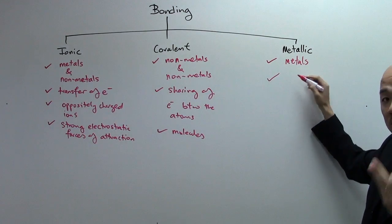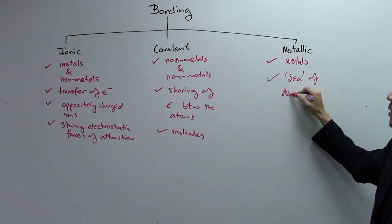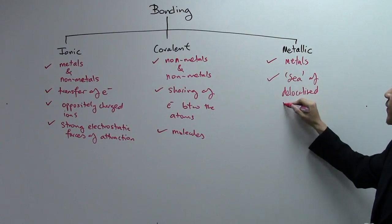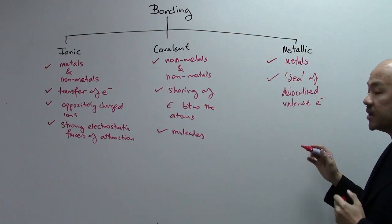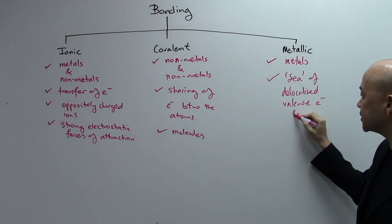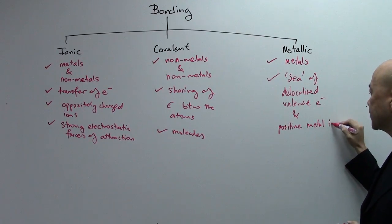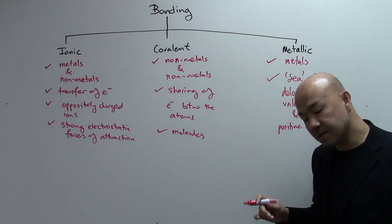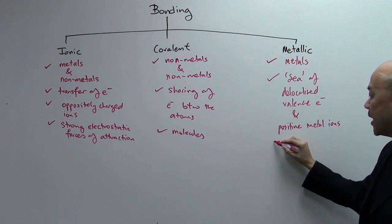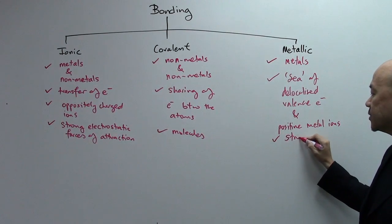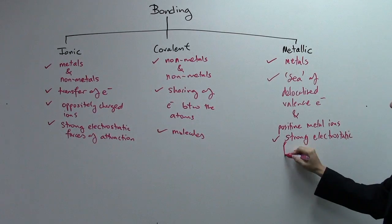And the valence electrons will be delocalized into empty spaces. We call them the sea of delocalized valence electrons. And this sea of delocalized valence electrons will then be surrounding the positive metal ions. These ions are formed from the metal atoms. After they lose their electrons, they will then form your positive metal ions. And the forces holding them is still your strong electrostatic forces of attraction.